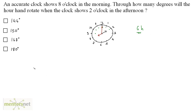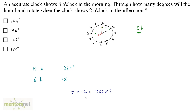In 12 hours the hour hand rotates by 360 degrees. So in 6 hours, x times 12 is equal to 360 times 6. 6 times 2 is 12, so x is equal to 360 divided by 2, and that's 180 degrees. So option D is the correct answer.